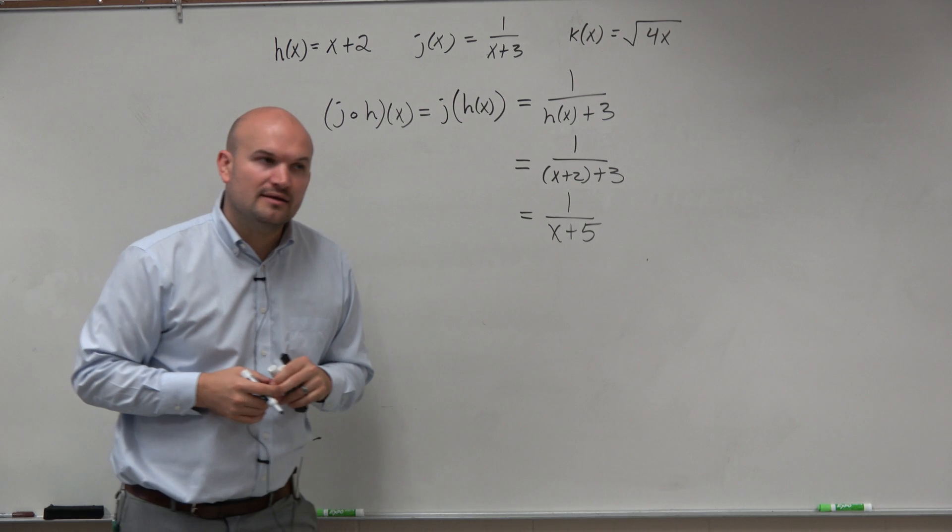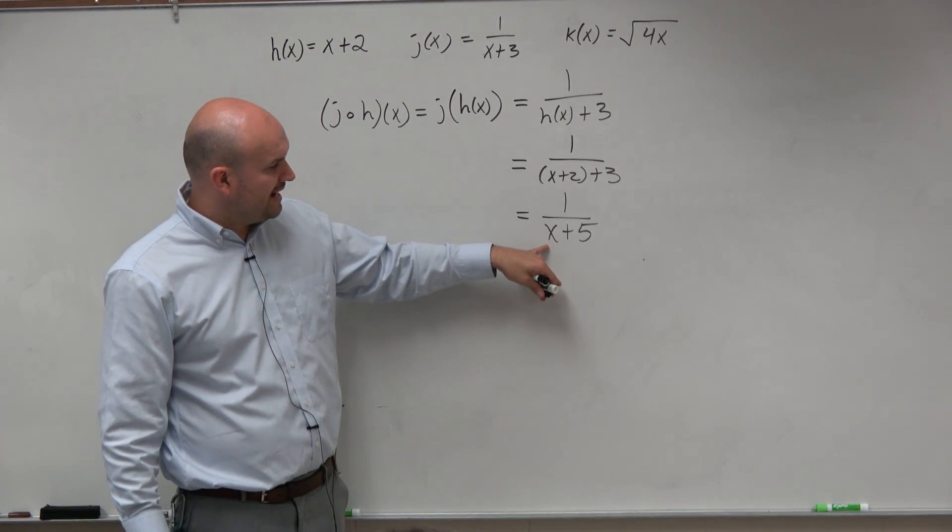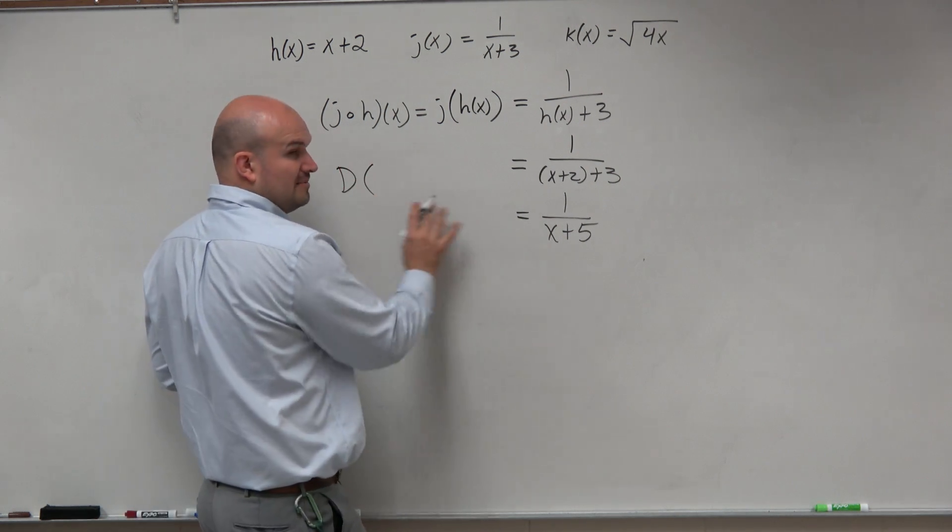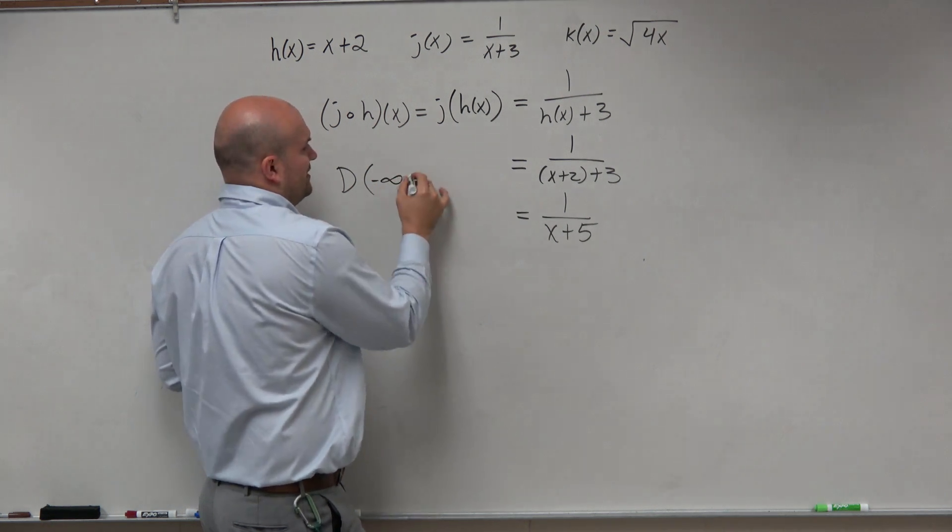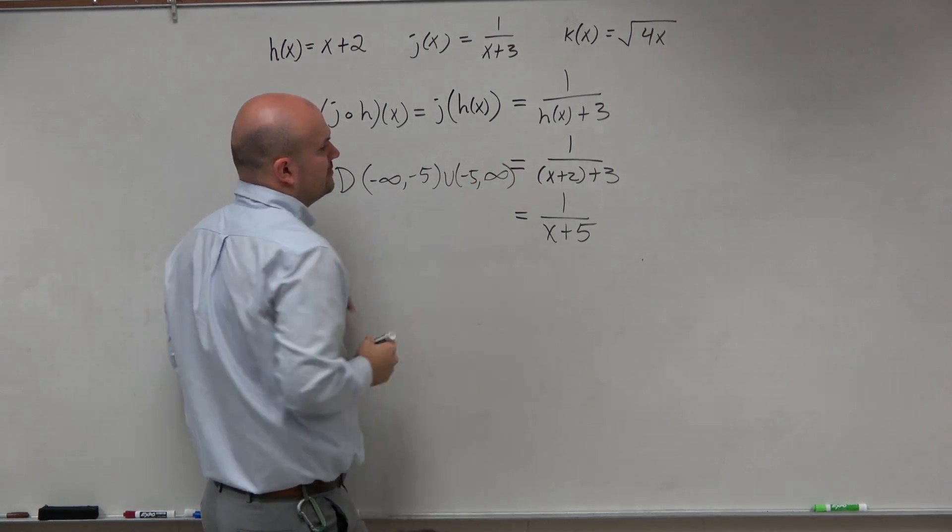Cool. Right? And then now, all I simply need to do is go ahead and find the domain. So, the domain in this case is going to be all numbers that are not equal to negative 5. So, negative infinity to negative 5, union negative 5 to infinity. Done.